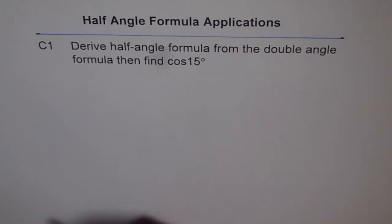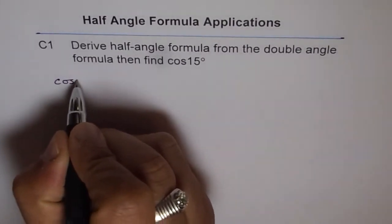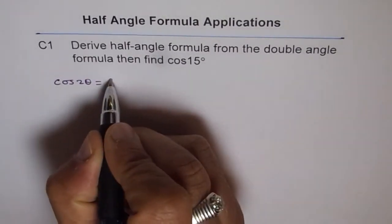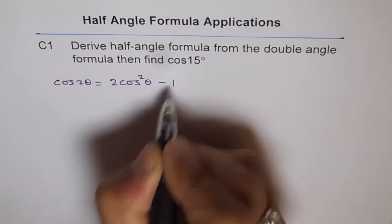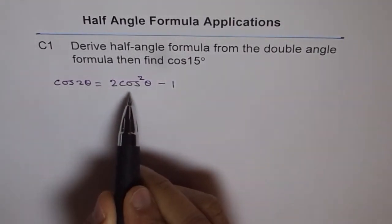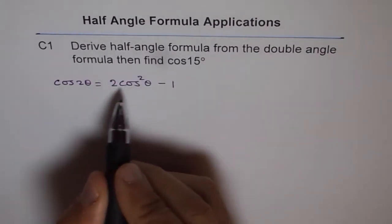Now, let me remind you about the double angle formulas which we got from compound angle formulas. We found that cos 2θ could be written as 2 cos²θ - 1, and we will use this formula to derive our half angle formulas.